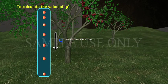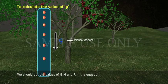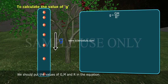To calculate the value of g, we should put the values of G, M and r in the equation g equals GM by r².